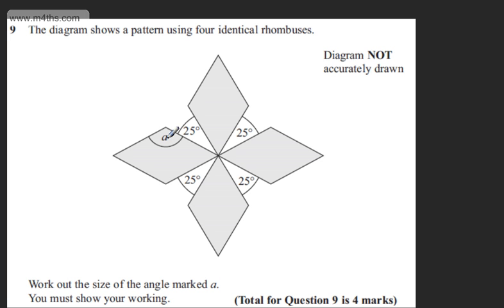Here's the angle A. I've got 25, 25, 25, and 25 degrees, and these are identical rhombuses.